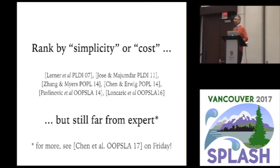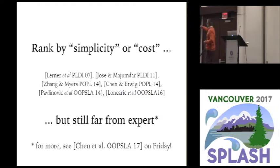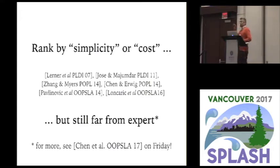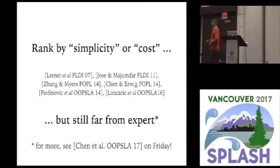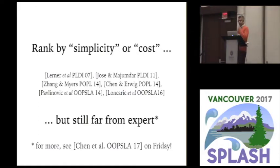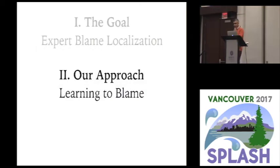Over the last four or five years, there have been very cool papers applying sophisticated logic and AI techniques, trying to rank the best location based on some notion of simplicity or cost. But unfortunately, all these systems are still pretty far from expert. In fact, the state of the art — Sherlock from Zhang and Myers, and even Chen and Erwig — will return either the plus or the sum_list call, not the empty list for the example I showed you. There are two other talks on this subject on Friday.